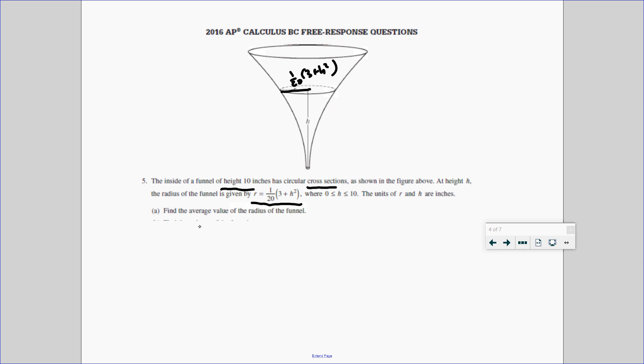And the first question they want me to find is the average value of the radius. Well, average value, that's just our favorite formula, which should be 1 over b minus a from a to b. And that's going to be f of x dx. So for us, since we're going from 0 to 10, we're going to have 1 over 10 minus 0, the integral from 0 to 10 of 1/20(3 + h²) dh this time.